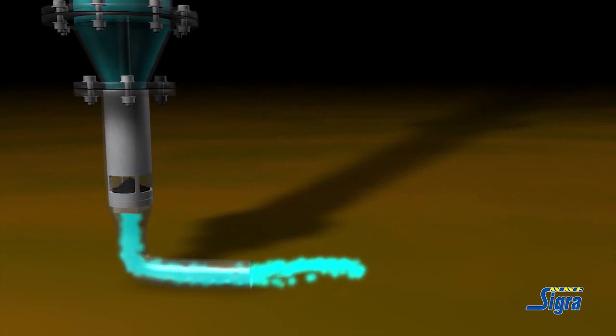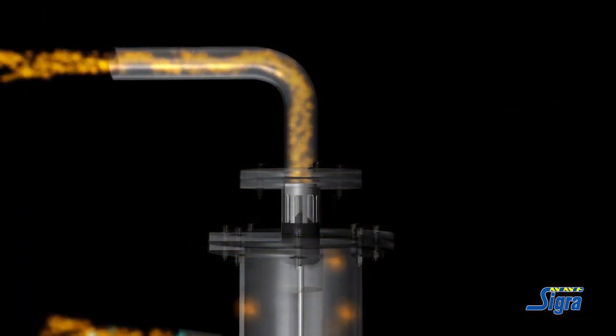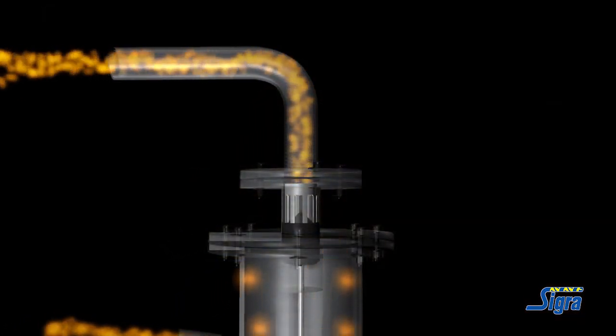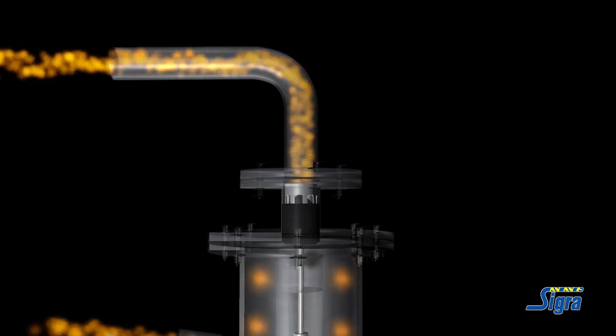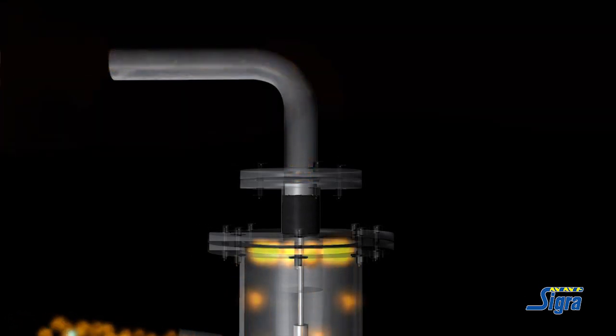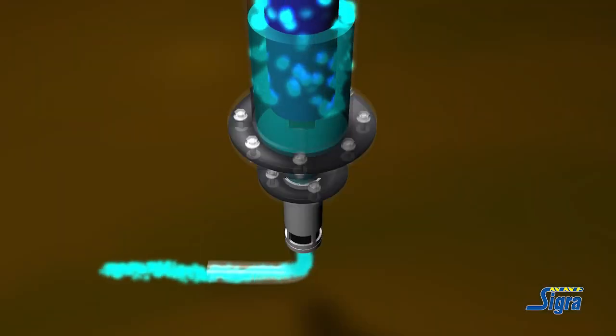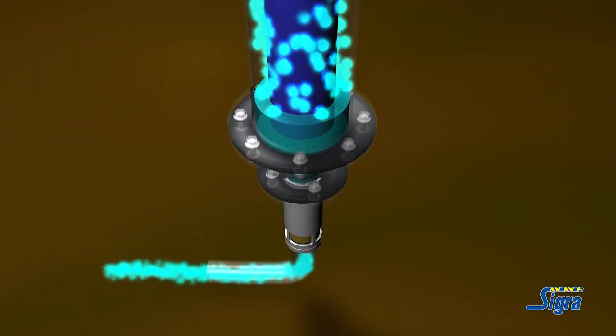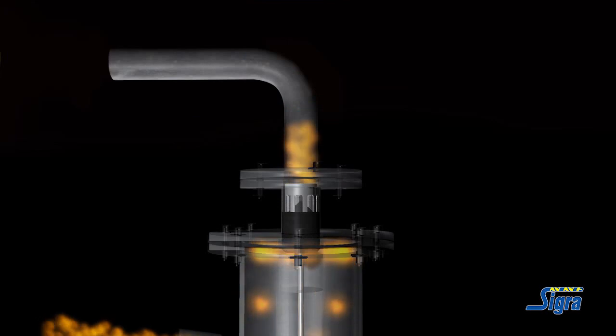The liquid valve shuts if the liquid level in the separator reaches a low level so as to prevent the loss of gas into the liquid takeoff. The gas valve is fully open when the liquid valve is shut, but if the liquid level in the separator reaches a high level, it closes so as to prevent the entry of liquid into the gas line and enables liquid to be purged from the separator before reopening the gas valve.